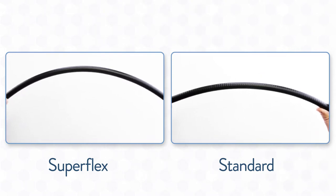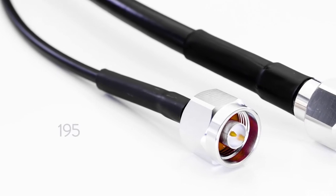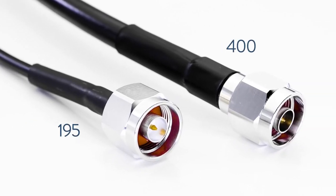Our low-loss LMR-type coaxial cables are 50-ohm cables that are available in 195 or 400 sizes, all the way up to 600.